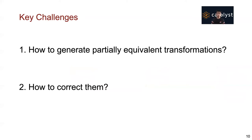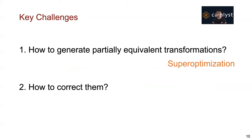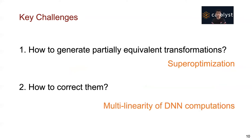In order to use this approach, we must address two key challenges. First, how can we automatically generate these partially equivalent transformations? And second, how can we correct them? PAT uses two key techniques to address these challenges: first, we use super-optimization techniques to generate partially equivalent transformations, and second, we use multilinearity of deep learning computations to correct the results.